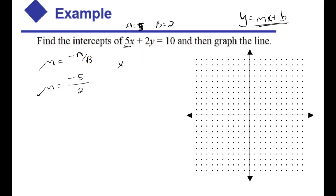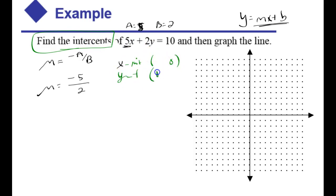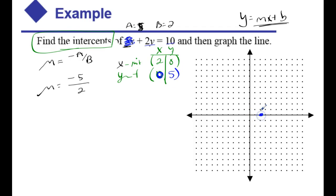It doesn't even ask you to find the slope, but it's nice to have so we can compare. It asks for x-intercepts and y-intercepts. To find an x-intercept, we let y be 0. To find a y-intercept, you can let x be 0. You can form a nice t-chart, x and y, always letting one of those values be 0. If I let y be 0, that drops this term out, then I divide both sides by 5 and get 2. Repeating this process for the y-intercept, I let x be 0 — that drops this term out because 5 times 0 is 0 — then divide both sides by 2 and get 5. Two points determine a line. The x-intercept is where the line crosses the x-axis, and the y-intercept is at 0, 5.